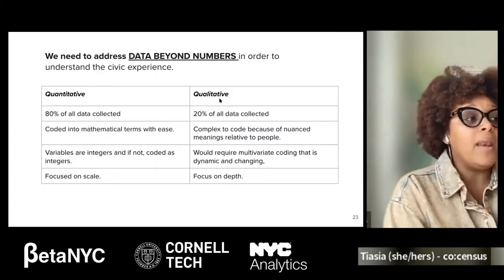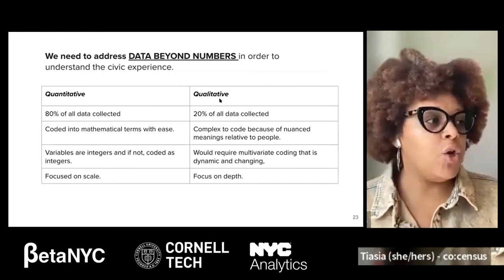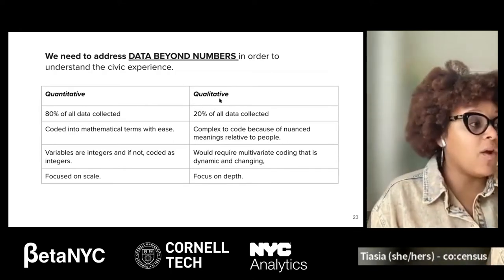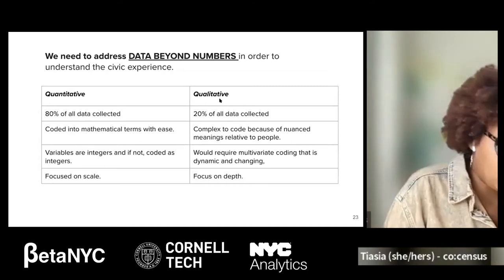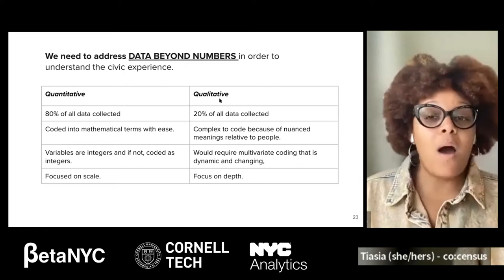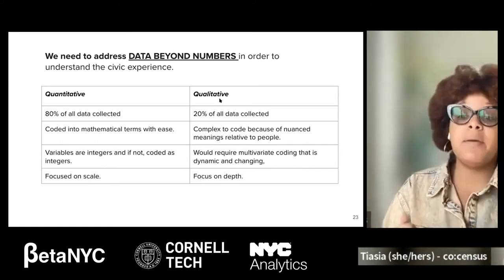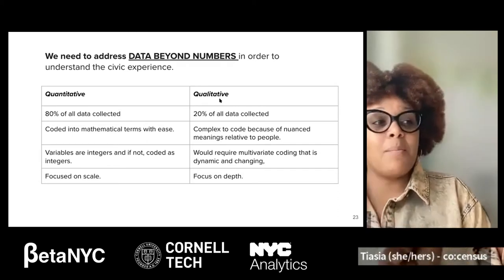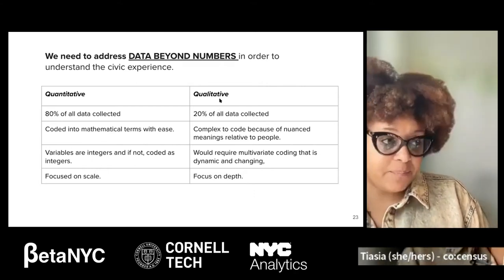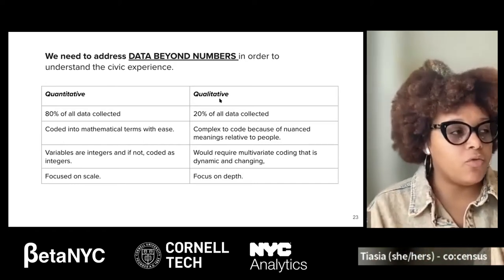DuBois was one of the pioneers of what we typically call mixed methods — looking at both quantitative data and qualitative data. He also hired an artist to sketch out U.S. census data, and his work in Philadelphia's seventh ward over a hundred years ago included interviewing over 5,000 people to publish 'The Philadelphia Negro,' expressing the black experience through the lens of people who lived there. We love to look at data beyond numbers — understanding the civic experience of people in different districts not just from numbers, but from what people are actually saying.